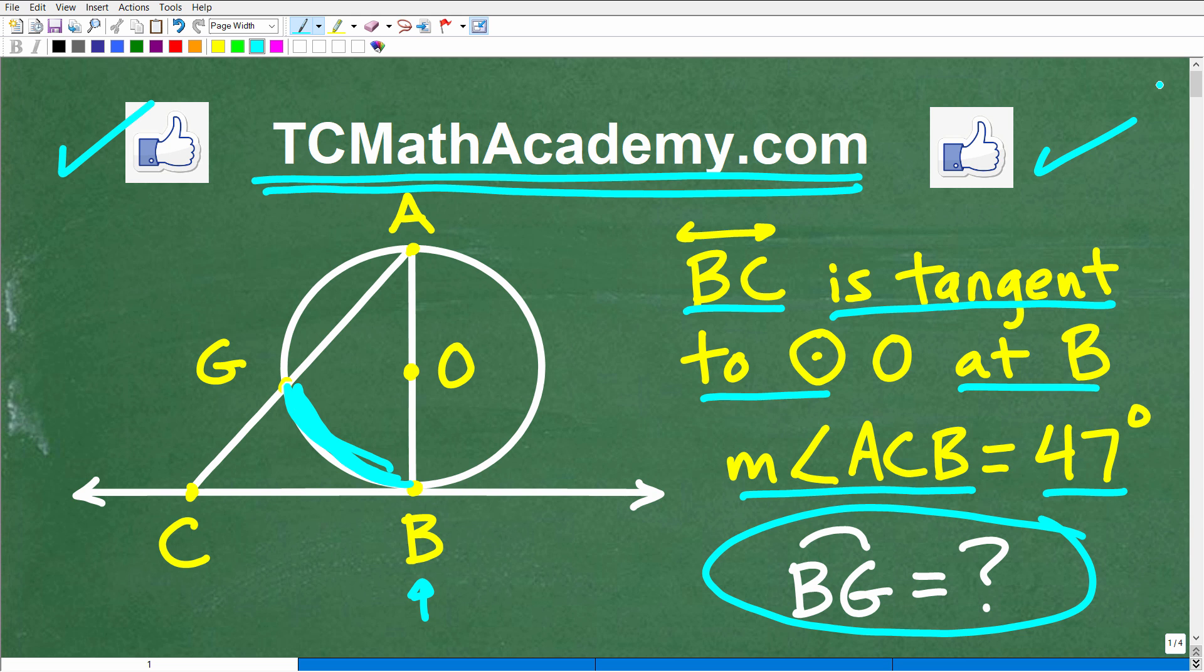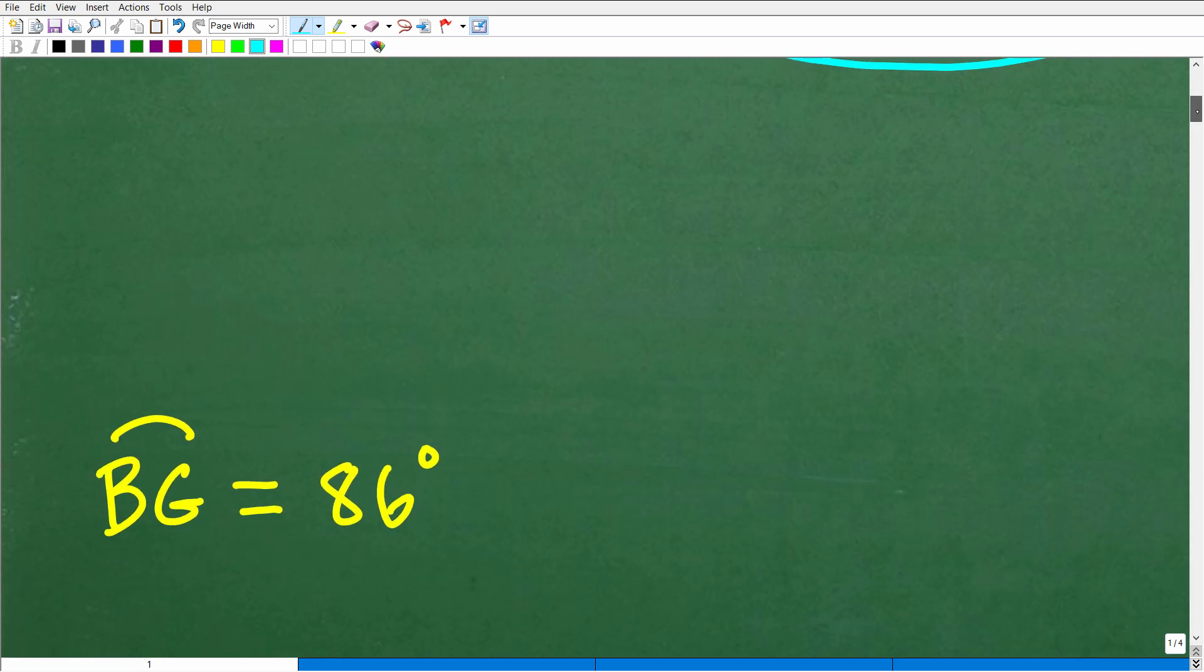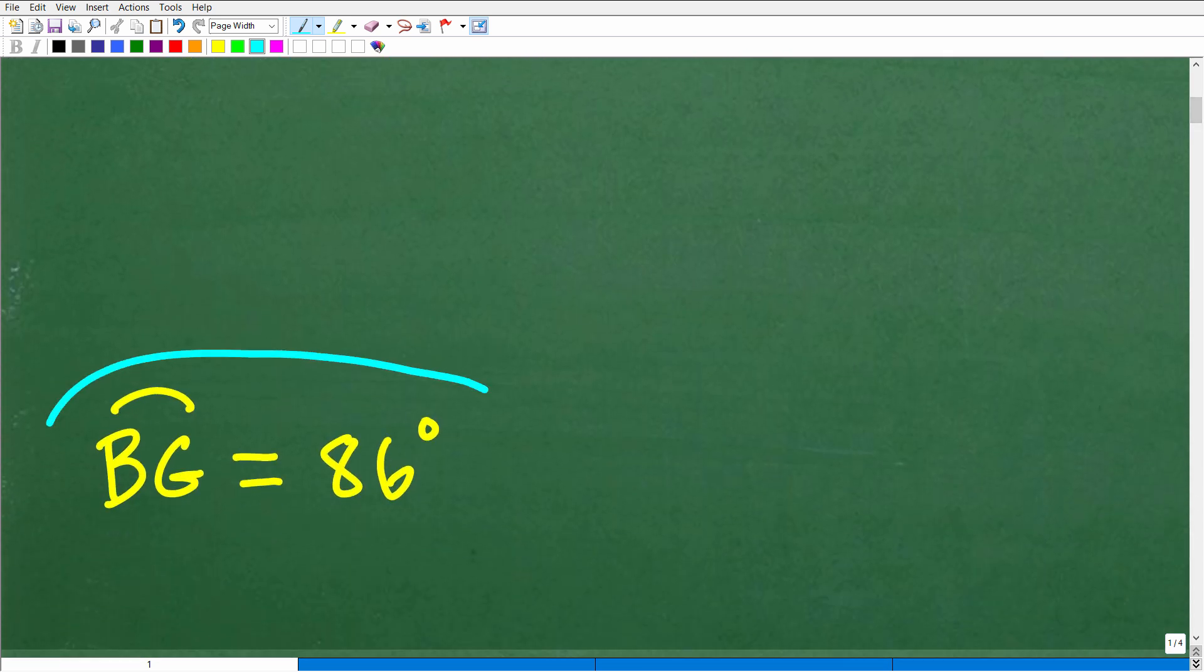Hopefully you understand the problem. Again, we're looking for the measure of arc BG. This little notation right here means arc, i.e. how many degrees from here to here. So let's kind of take a look at the answer. Arc BG is how many degrees? Well, arc BG is 86 degrees.